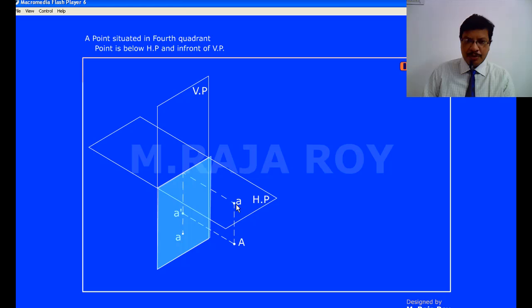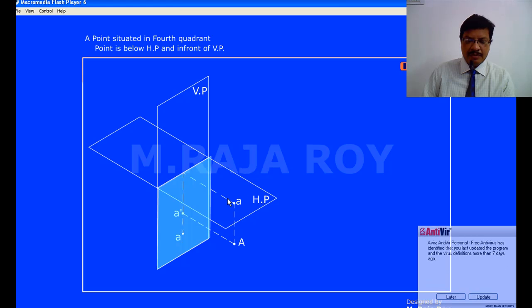Whatever top view you are getting here, the top view is overlapping with the front view somewhere here. So when the point is in the 4th quadrant, you are getting the front view below the XY line as well as top view also you are getting below the XY line. That is the main drawback with the projections of points in the 4th quadrant.